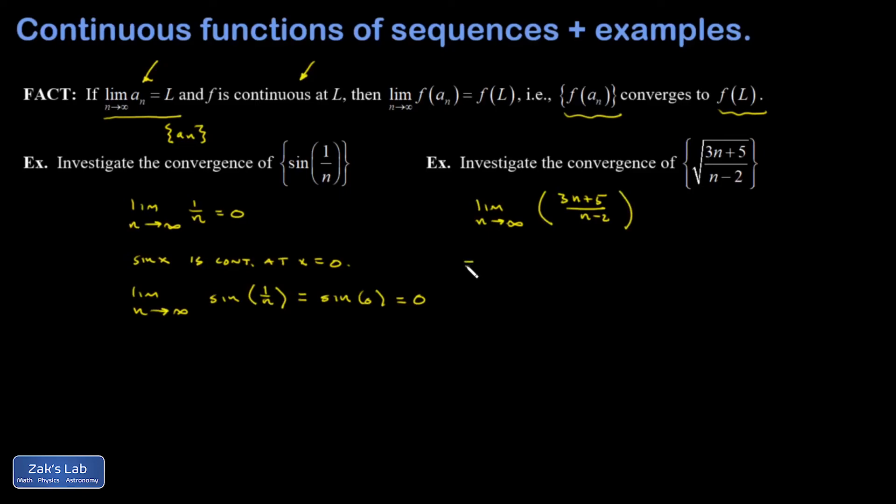If I do this in the more formal style, then I would have to divide the top and bottom of that rational expression by n. And I get 3 plus 5 over n over 1 minus 2 over n. And then we apply the limit to each of those terms in the numerator and denominator. And these two go to zero. And I'm left with 3 over 1 or 3.